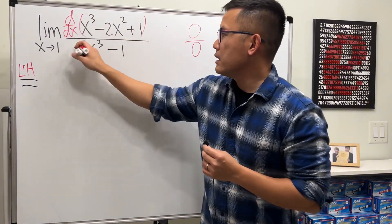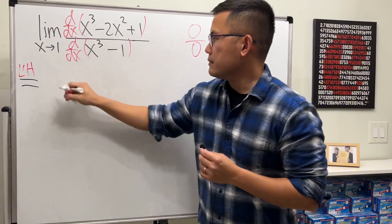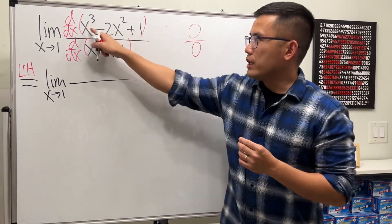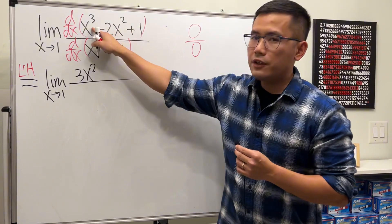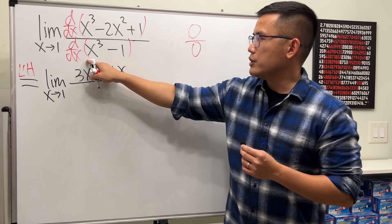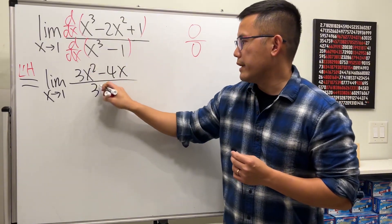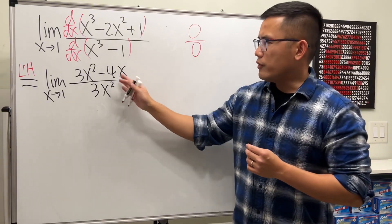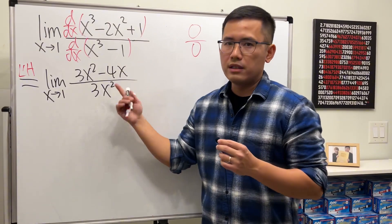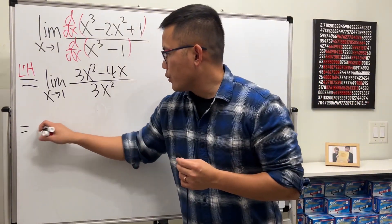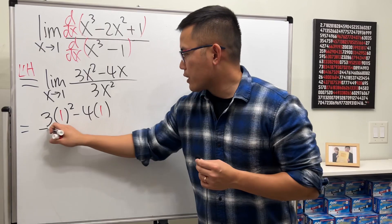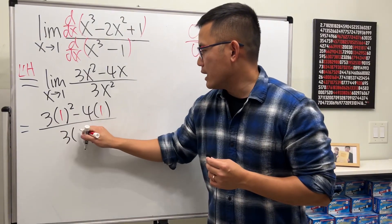So we go ahead and differentiate the top and differentiate the bottom. The limit as x approaches one: on the top we get 3x² for this derivative, and then negative 4x. Differentiating x³ minus one gives us 3x². You can factor out the x and simplify, but since x is just approaching one we can plug in the number and calculate: 3 times 1² minus 4 times 1, over 3 times 1².